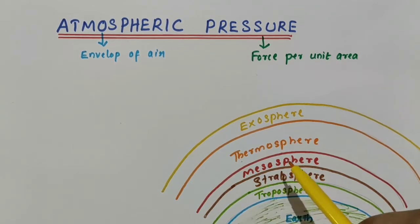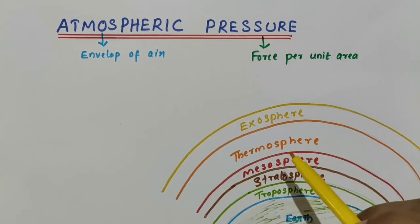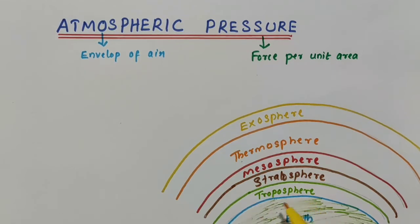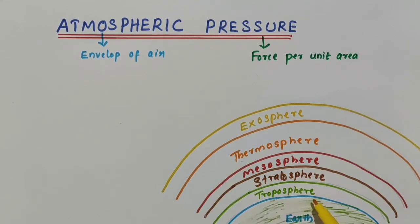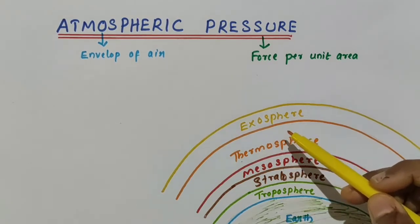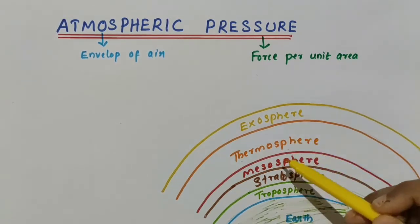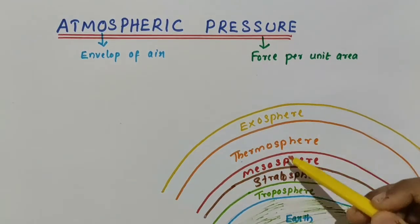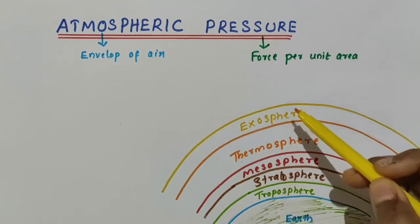The atmospheric pressure is greatest at the bottom of the atmosphere, so the layer with the most air pressure is the troposphere. The atmospheric pressure decreases with height in the atmosphere — so when we go up, the atmospheric pressure decreases.